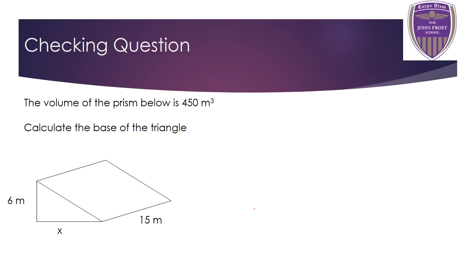The checking question for today's lesson: we're given a triangular prism with a volume of 415 meters cubed. The length of the prism is 15 meters and the height of the triangle is 6 meters. Use that information to work out the base of the triangle, labelled x. Pause the video and have a go.